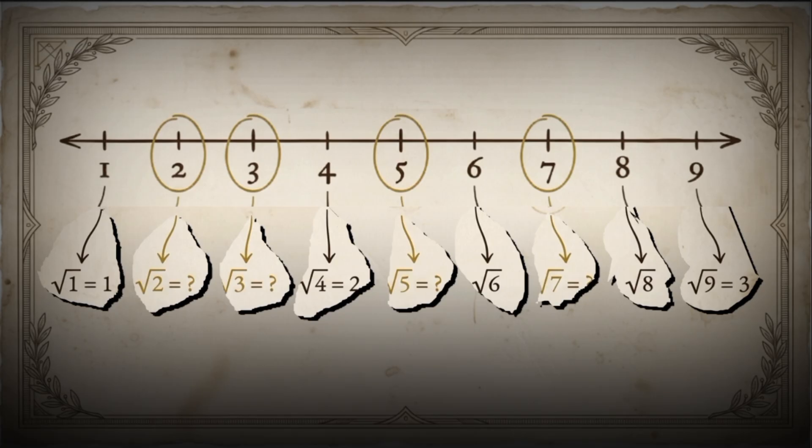What about non-prime numbers? They either produce an integer, like square root of 4 equals 2, or can be expressed as a coefficient times a radical, like square root of 12 equals 2 times square root of 3.